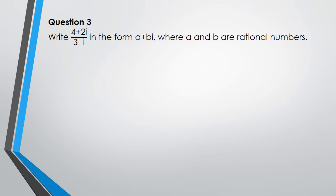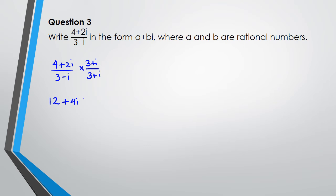Question 3: write this complex number in the form a plus bi. We need to multiply by the conjugate of the denominator. So we have (4 plus 2i) divided by (3 minus i), multiplied by (3 plus i) over (3 plus i). Expanding the numerator: 4 times 3 is 12, 4 times i is 4i, 3 times 2i is 6i, and 2i times i is 2i-squared. The denominator is 3-squared minus i-squared.